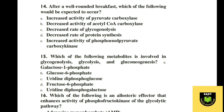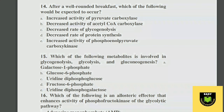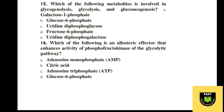Question 14. After a well-rounded breakfast, which of the following would be expected to occur? A increased activity of pyruvate carboxylase, B decreased activity of acetyl-CoA carboxylase, C decreased rate of glycogenolysis, D decreased rate of protein synthesis, E increased activity of phosphoenolpyruvate carboxykinase. The correct option is C, decreased rate of glycogenolysis.